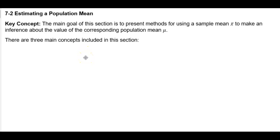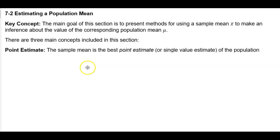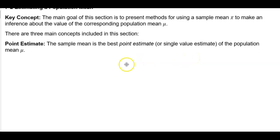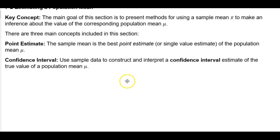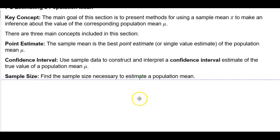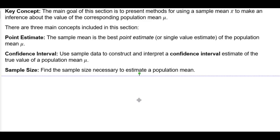There are three main concepts included in this section. Point Estimate: The sample mean is the best point estimate, or single value estimate, of the population mean. Confidence Interval: Use sample data to construct and interpret a confidence interval estimate of the true value of a population mean. Sample Size: Find the sample size necessary to estimate a population mean.